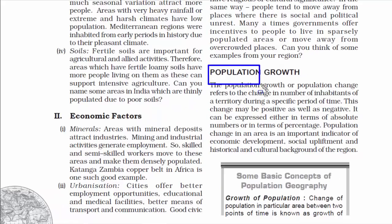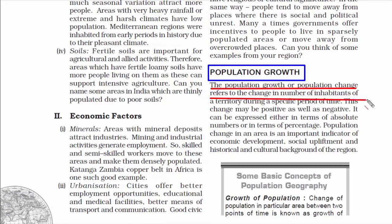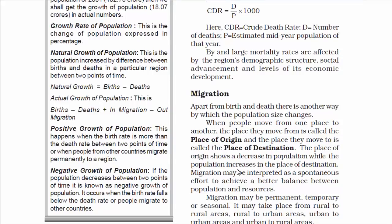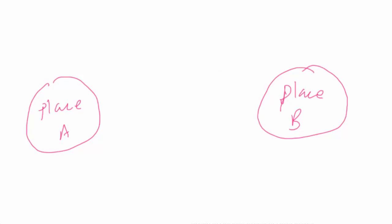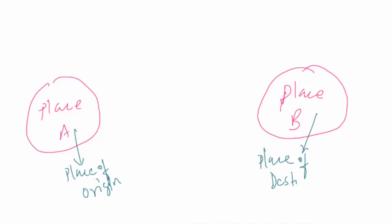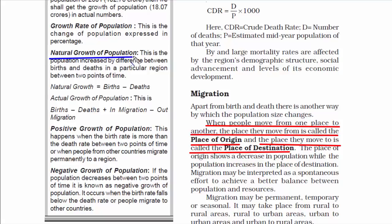The next topic is population growth. In simple terms, it means whether the population of a place has increased or decreased over a period of time. This change can be positive as well as negative. There are three major components of population change: births, deaths, and migration. The number of newborns are the births — population increases. The people dying every year are the deaths — population decreases. When people move from one place to another, it's called migration. The place they move from is the place of origin, and the place they move to is the place of destination. Natural growth equals births minus deaths.